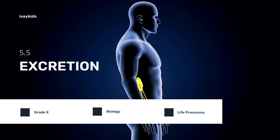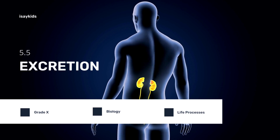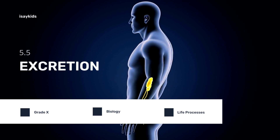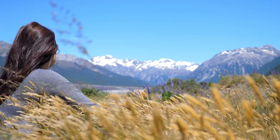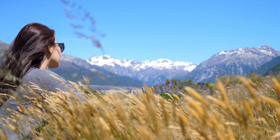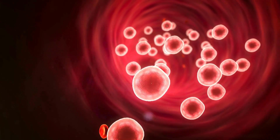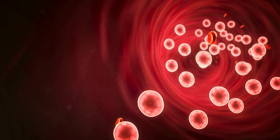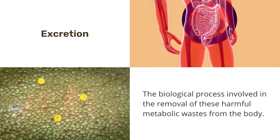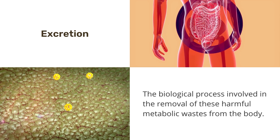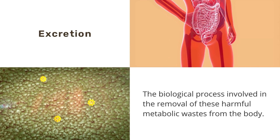Hi, we are on the last part of this chapter and I am very excited. Hope you have seen the other parts and are good with them. We know how organisms get rid of gaseous waste generated during photosynthesis or respiration. Other metabolic activities generate nitrogenous materials which need to be removed. The biological process involved in the removal of these harmful metabolic wastes from the body is called excretion.